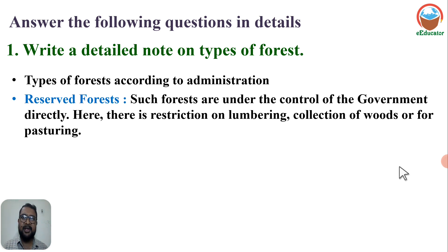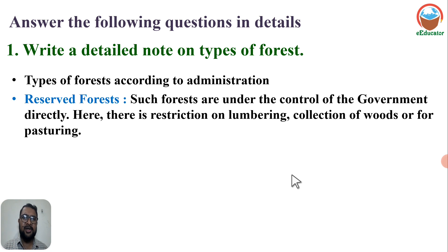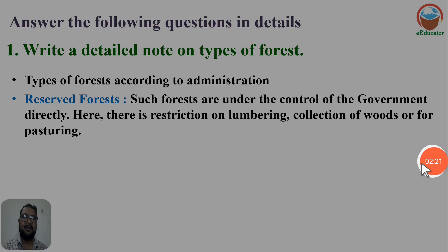Number one is Reserved Forest. Such forests are under the direct control of the government. This kind of forest is controlled by the forest department of the government. There are restrictions on lumbering, collection of wood, and pasturing in these reserve forests.